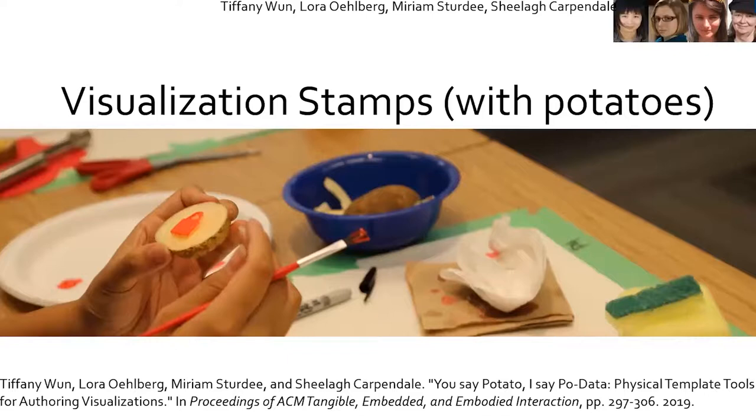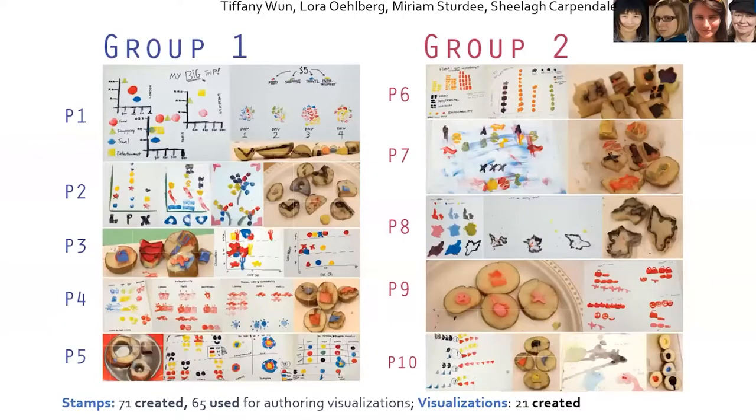We thought, well, maybe we need to think about this tedium. Can we discover what people might want to do repetitively? So we ran a workshop about making possible visualization stamps with potatoes and poster paints and paring knives, and people made all kinds of visualization stamps and created all kinds of visualizations with them. I definitely think this is a way that we could still move forward with having a set of stamps that you use for quickly creating and putting together in a bottom-up way a visualization.